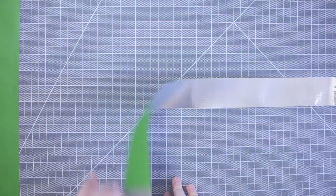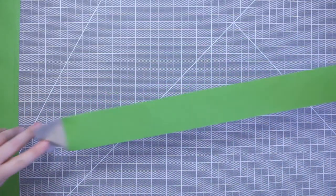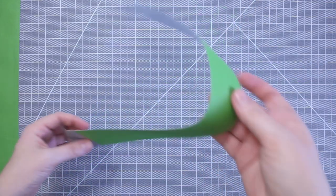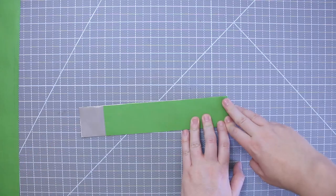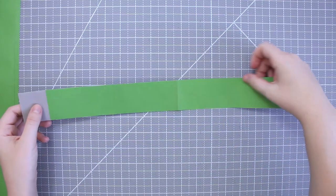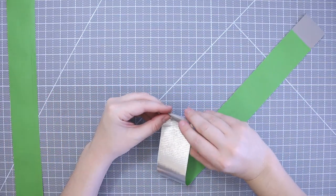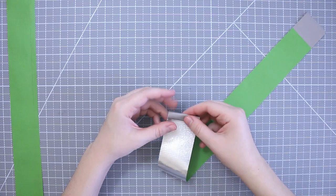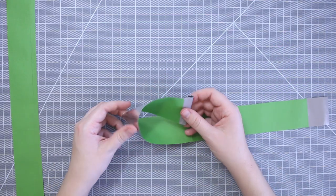Now take one strip and fold it in half. This helps as a guide to find the center. On one side roll the end so it's sticky on both sides. Fold it around like this and stick it on the center line.